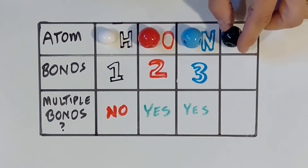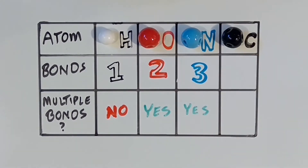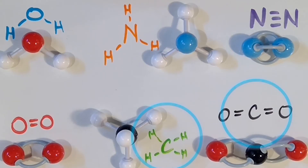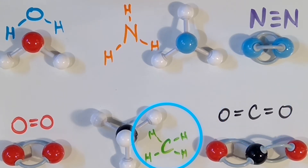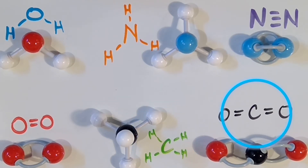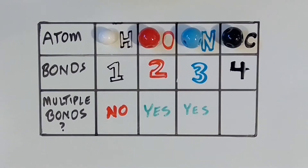Let's look at molecules containing carbon. Do you identify any trends that carbon seems to follow? It looks like carbon tends to form four bonds. In methane, carbon bonds to four hydrogen atoms. In the case of carbon dioxide, carbon forms two double bonds. That means that the carbon is also bonded four times. So in all cases we see, carbon will bond four times, and multiple bonds are possible.